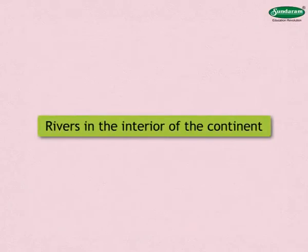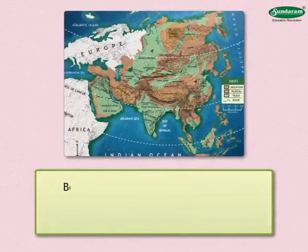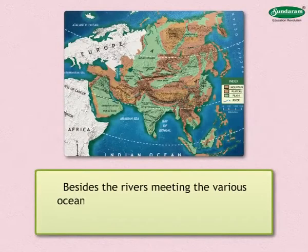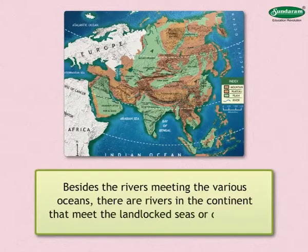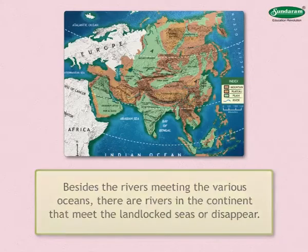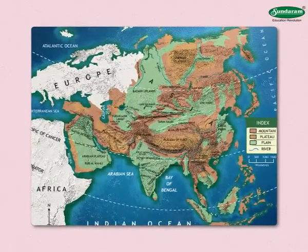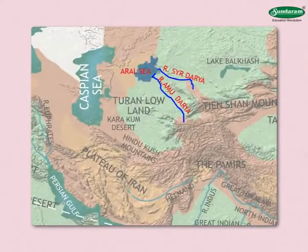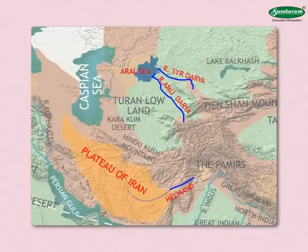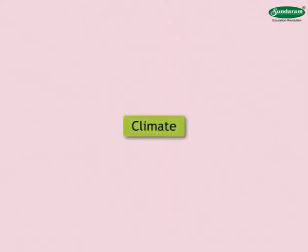Rivers in the interior of the continent: Besides the rivers meeting the various oceans, there are rivers that meet landlocked seas or disappear and do not meet any ocean. They include the Syr Darya and Amu Darya rivers that meet the Aral Sea, and the Helmand that disappears on the plateau of Iran.